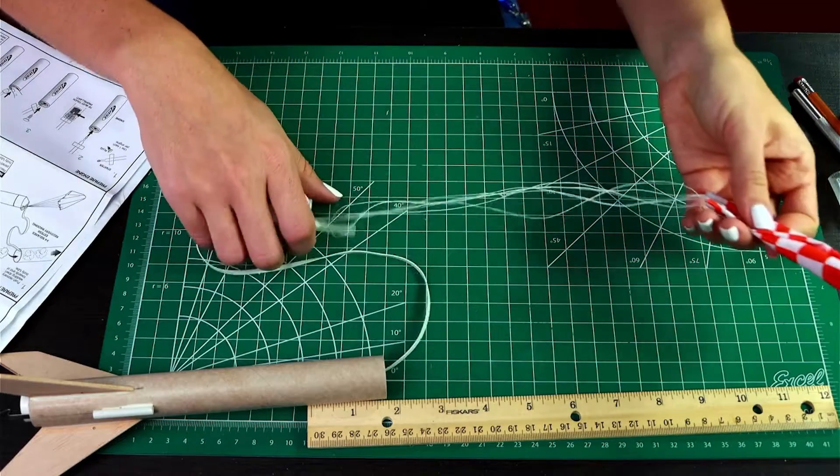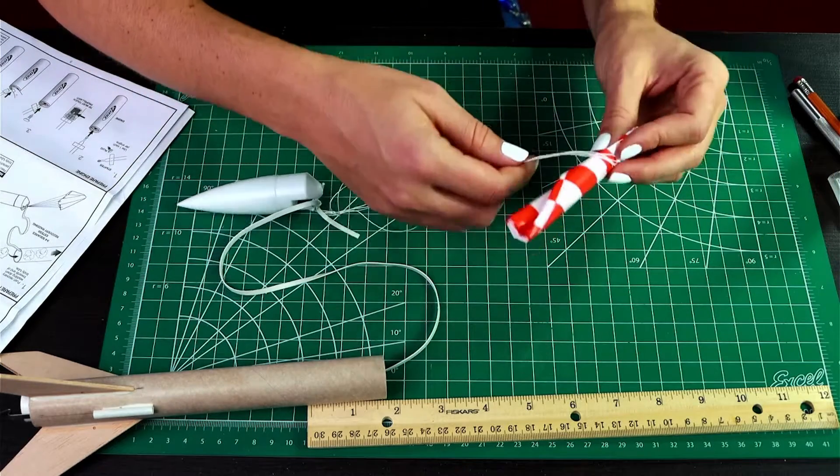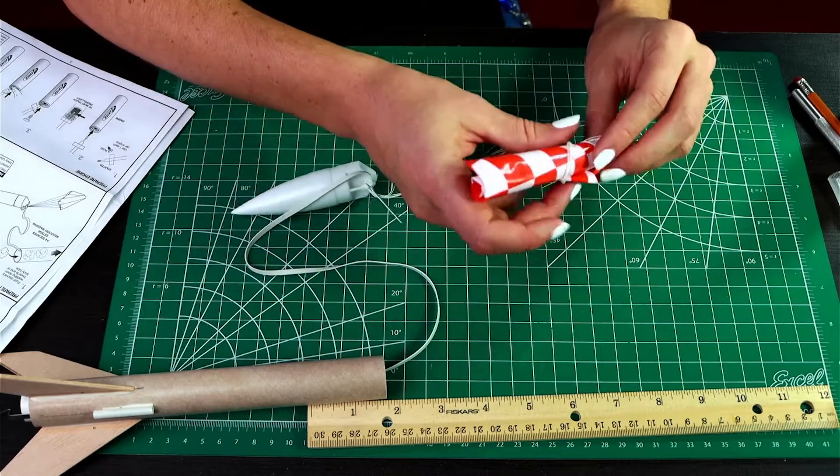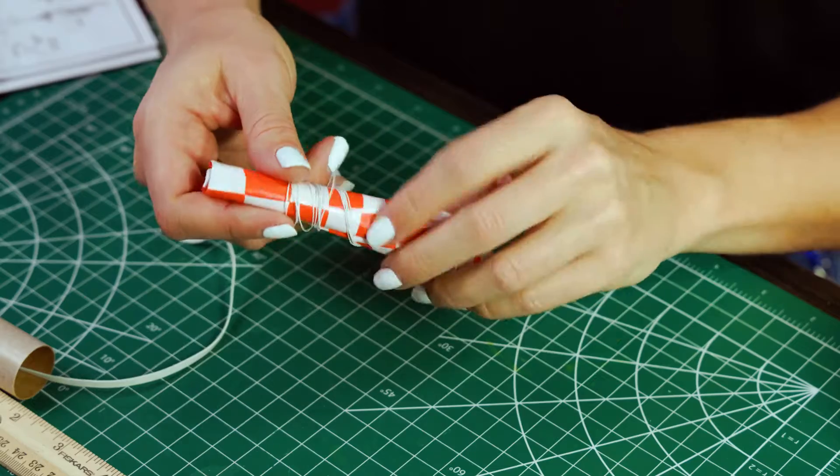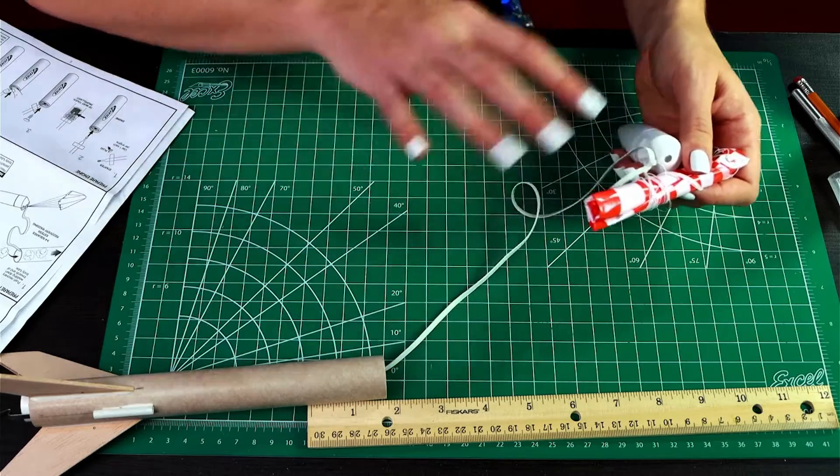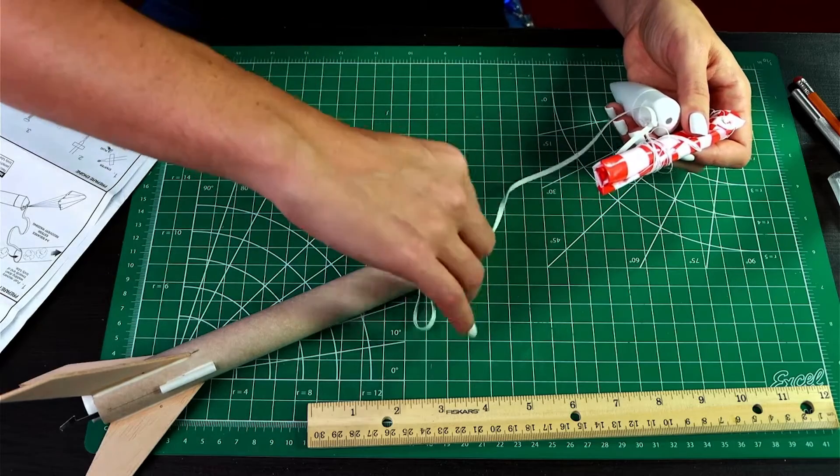And then with your shroud lines, we want to wrap them around this, but we want to do it really loosely. You can even just turn the parachute to get the lines around there. Not too tight or else it's not going to unfurl correctly. And then all this is going to go into the body tube.